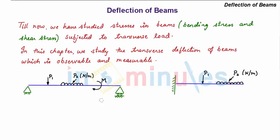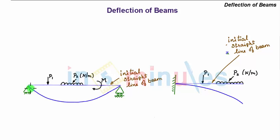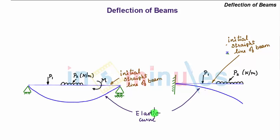In the figure we show a typical simply supported beam with transverse loads and a couple acting within the span, and in another figure we show a cantilever beam with different transverse loads. The effect of these loads on the respective beam is that the beam bends. The initial straight line of the beam becomes curved, which is called the elastic curve.